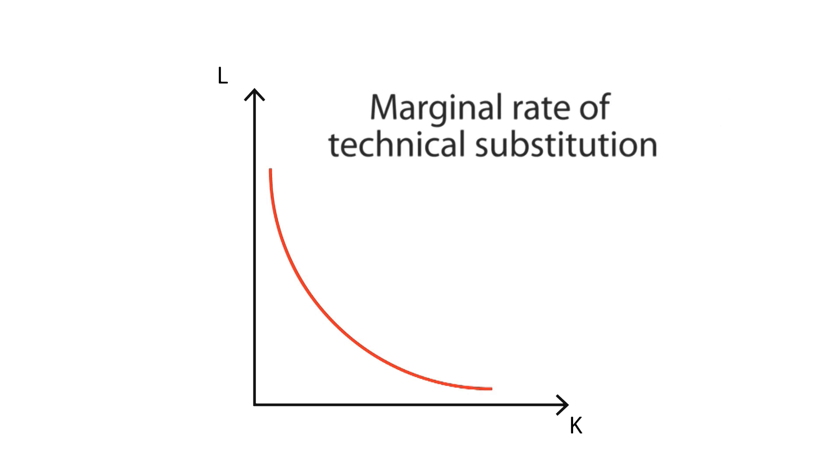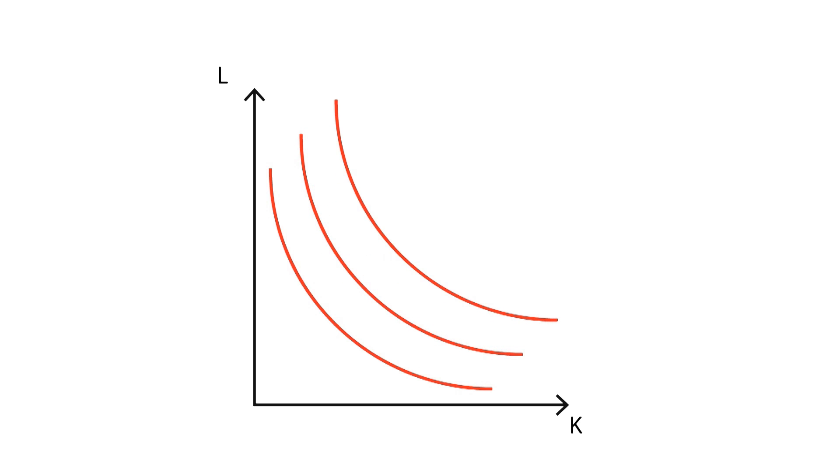This relation gives us the marginal rate of technical substitution between these inputs, which is the slope of the curve in each of its points. An increase in production will only come when we displace the isoquant curves outwards.